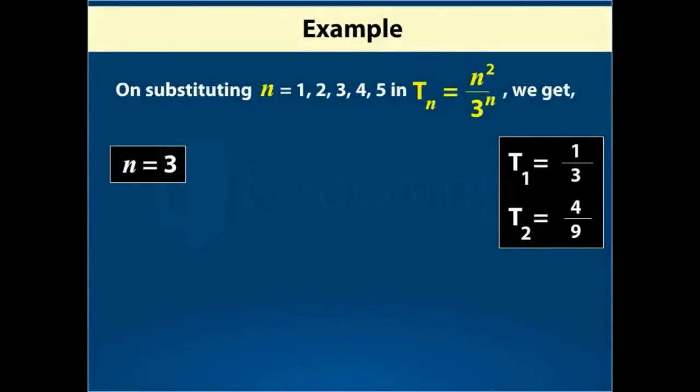For n equal to 3, T3 is equal to 9 over 27.